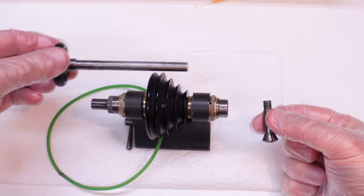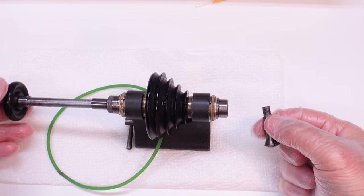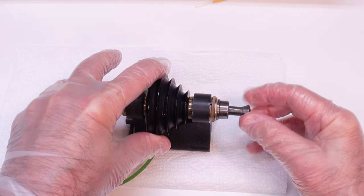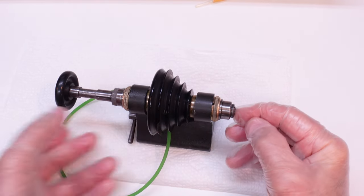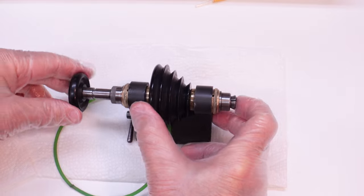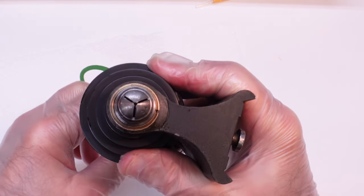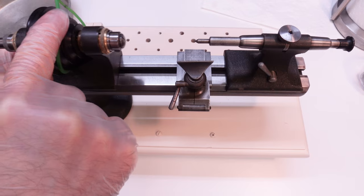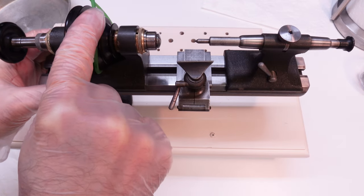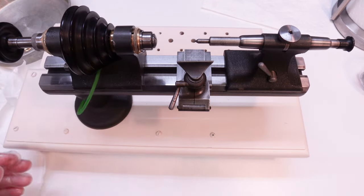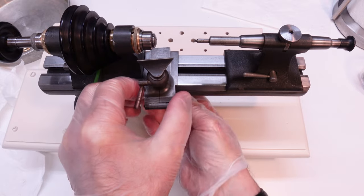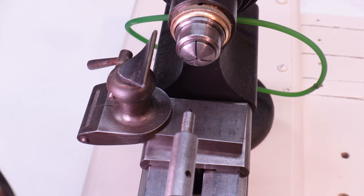The final step is inserting the drawbar and engaging a collet to make sure everything is tightening and aligning correctly. After all that work, I'll reinstall the headstock on the lathe and confirm that we have the proper range of motion and alignment with the tailstock.